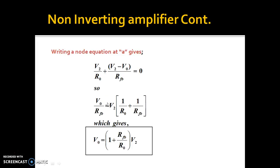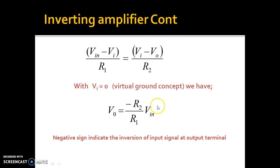So, solving, due to virtual ground concept V1 will be equal to 0, so we will have the voltage equation as Vo equals minus R2 by R1 into Vin. This negative sign indicates the inversion of the input signal at the output terminal. That means the inverting amplifier will invert the input signal at the output.